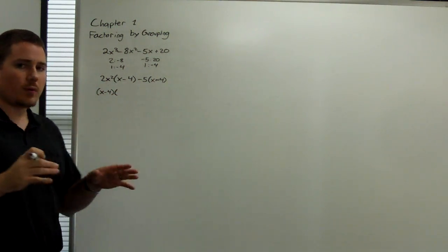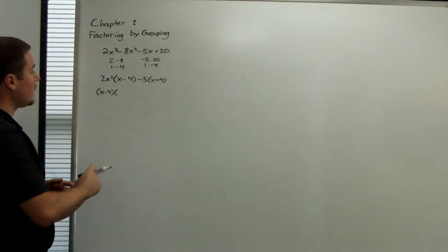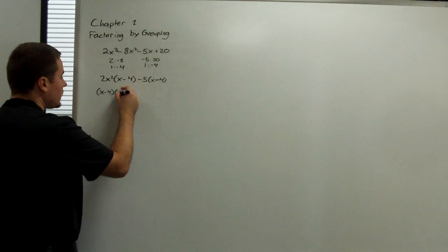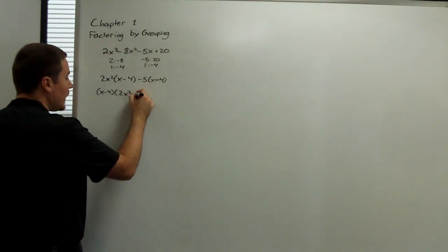And then we wrote what each term divided by that least common factor was. So this term divided by x minus 4 is just 2x squared. This term divided by x minus 4 is negative 5.